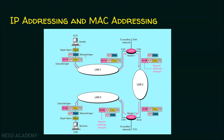In the network layer, source IP address A and destination IP address P are added. Then it goes to the data link layer where header and trailer are added. In the header, the source MAC address and the destination MAC address are added. We will never communicate using MAC addresses directly; we always communicate using names or IP addresses. The networking infrastructure takes care of MAC addressing.